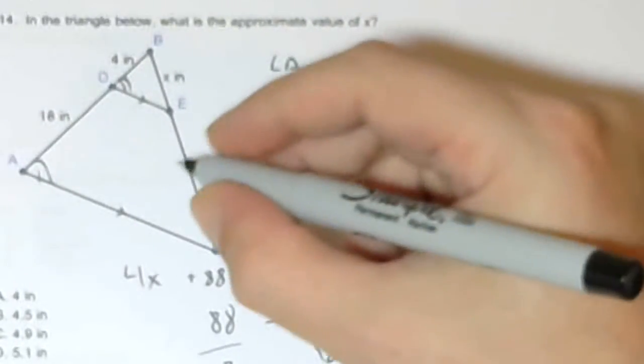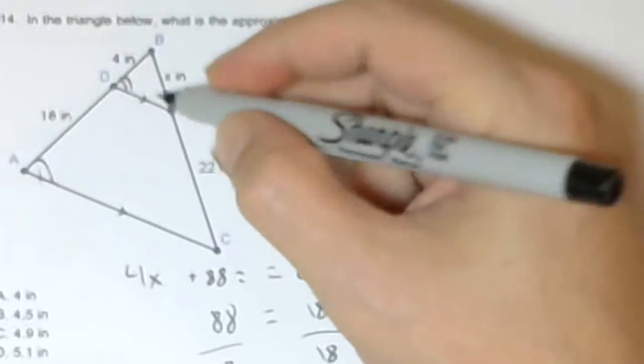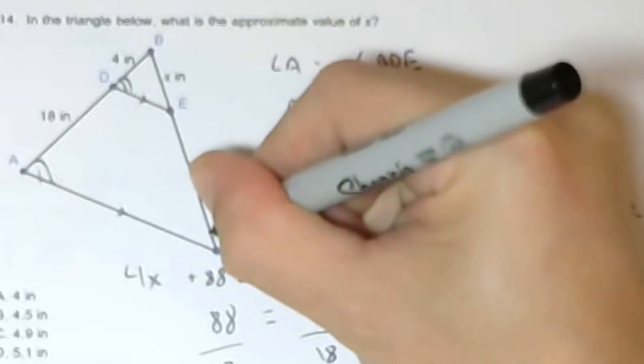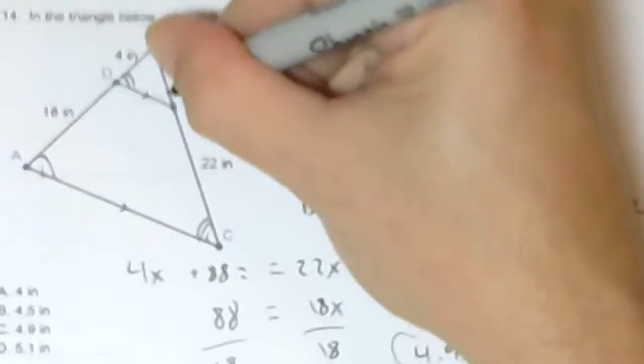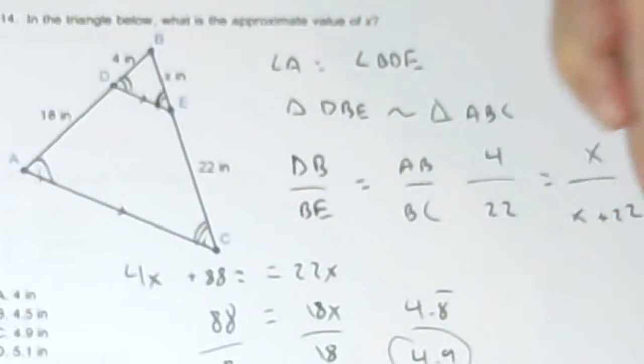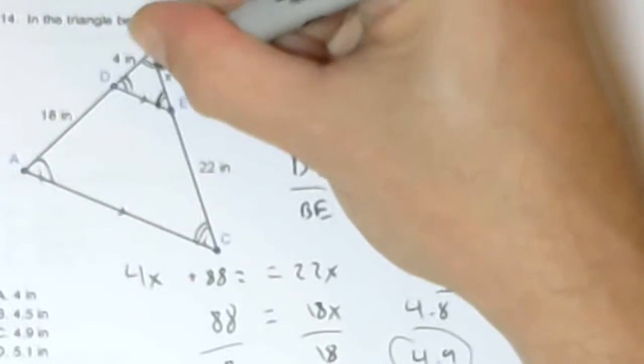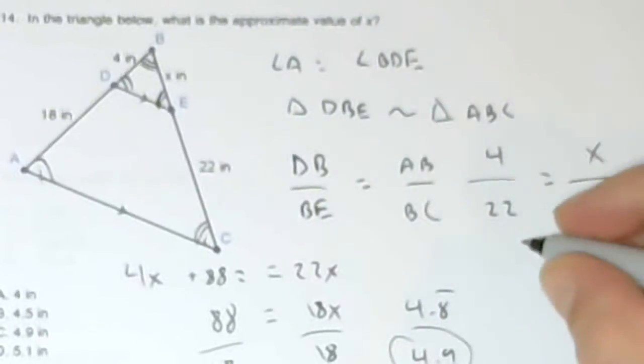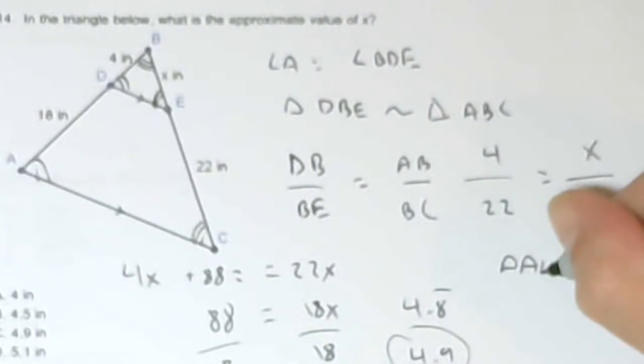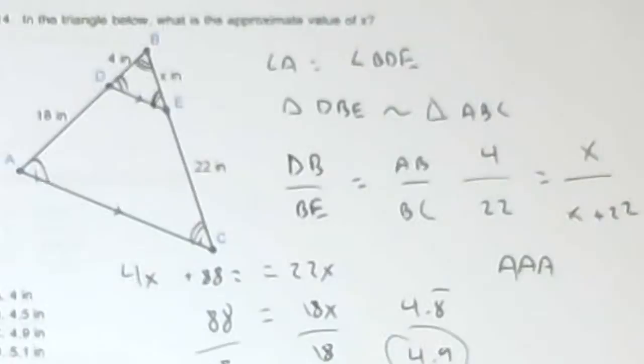And basically these are similar triangles because these two parallel lines mean also that these angles are equal. And angle B equals itself. So that's angle, angle, angle similarity.